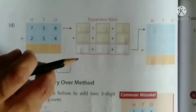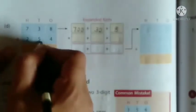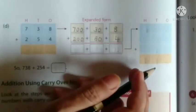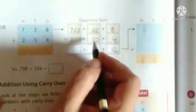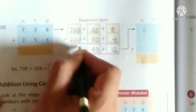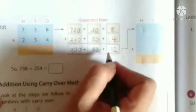Now turn the page. D: 738 plus 254. First, expand: 738 is 700 plus 30 plus 8; 254 is 200 plus 50 plus 4. Step 2: add the values at each place. 8 plus 4 is 12. Then 30 plus 50: 0 plus 0 is 0, 3 plus 5 is 8, so 80. Then 700 plus 200: 0 plus 0, 0 plus 0, 7 plus 2 is 9, so 900. That gives 900 plus 80 plus 12.